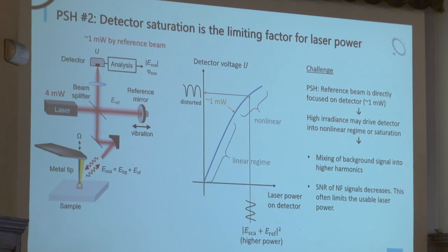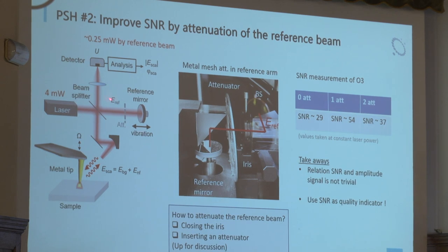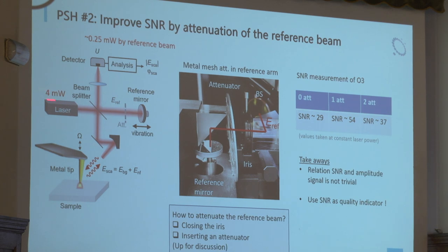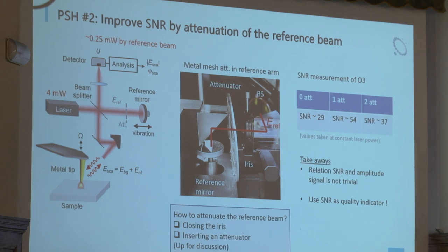In SNOM we are modulating the signal, so we have a DC power level from the reference arm and then our modulated signal on top. We want the intensity signal to translate linearly into voltage. If the reference beam is too intense and we are in the nonlinear region, the signal gets distorted — the background might modulate into higher harmonics and the noise level increases. The solution is to place an attenuator in the reference arm to reduce power to the detector. We use a metal-sheet attenuator in our labs.